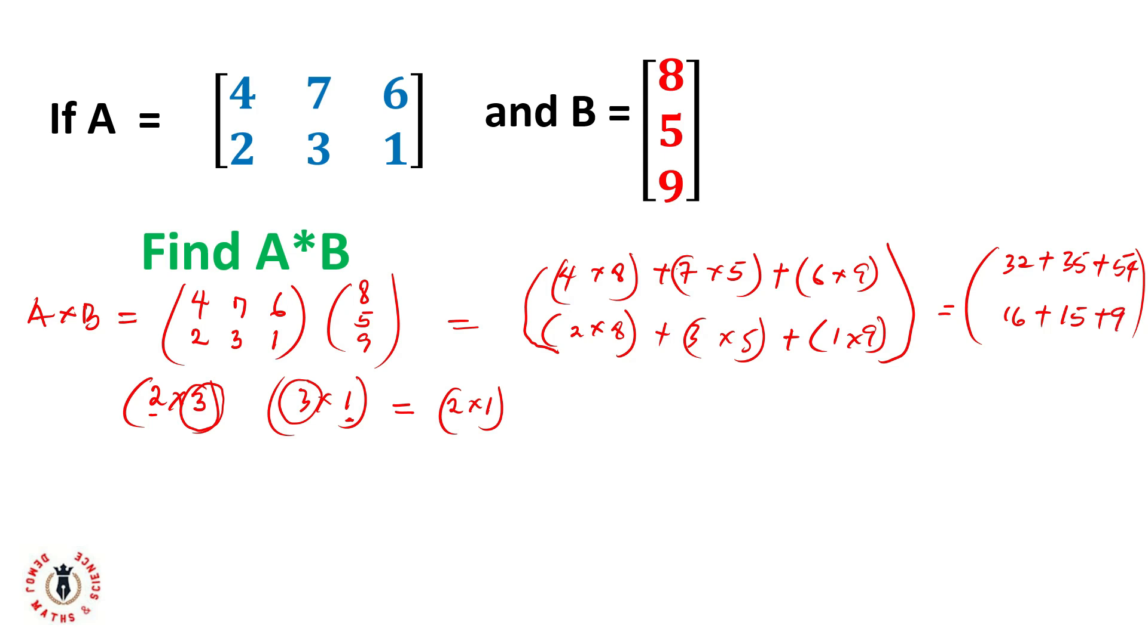Let's sum them together. So this will become 32 plus 35 is 67, 67 plus 54 is 121. So I'll have 121. And 16 plus 15 is 31, plus 9 is 40. So here is the product. And if you look at this carefully, like I said at the beginning, it should result into a 2 by 1 matrix. This matrix has 2 rows and 1 column. With this, I hope you understand how to work with matrices.